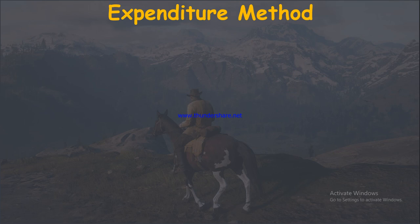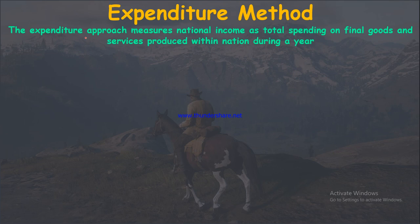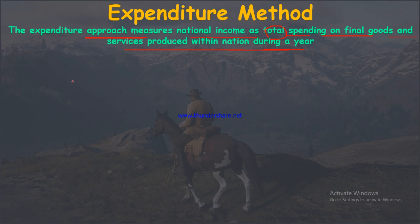Now let's talk about the expenditure method. The expenditure method approaches national income as total spending on final goods and services produced within a nation during the year. For example, in India, national income is calculated by taking the total expenditure on goods and services within a year.